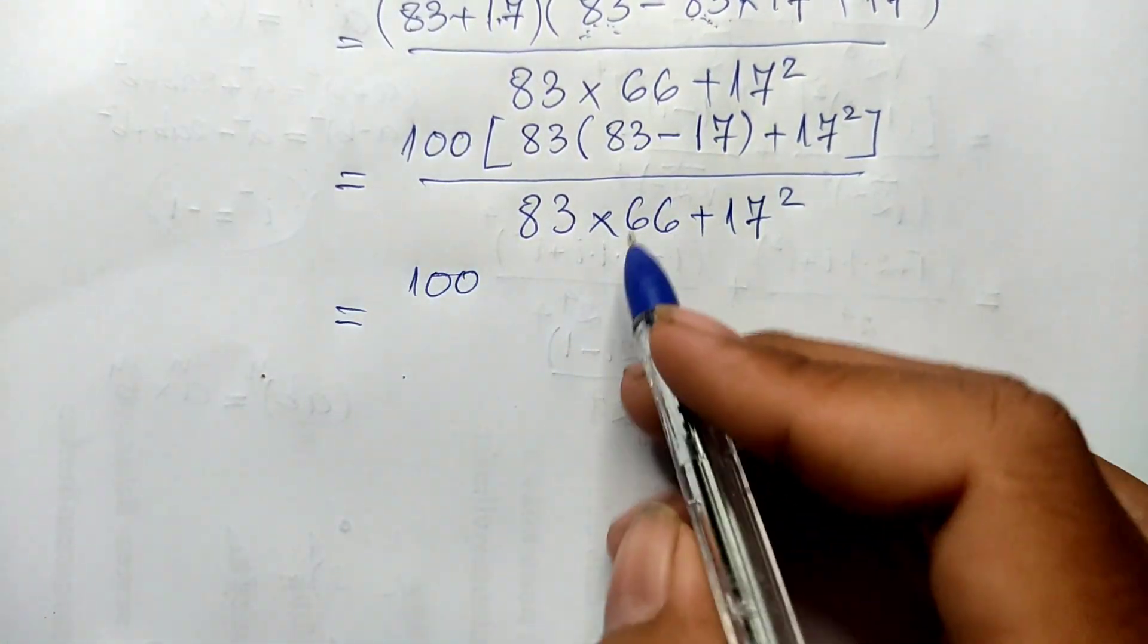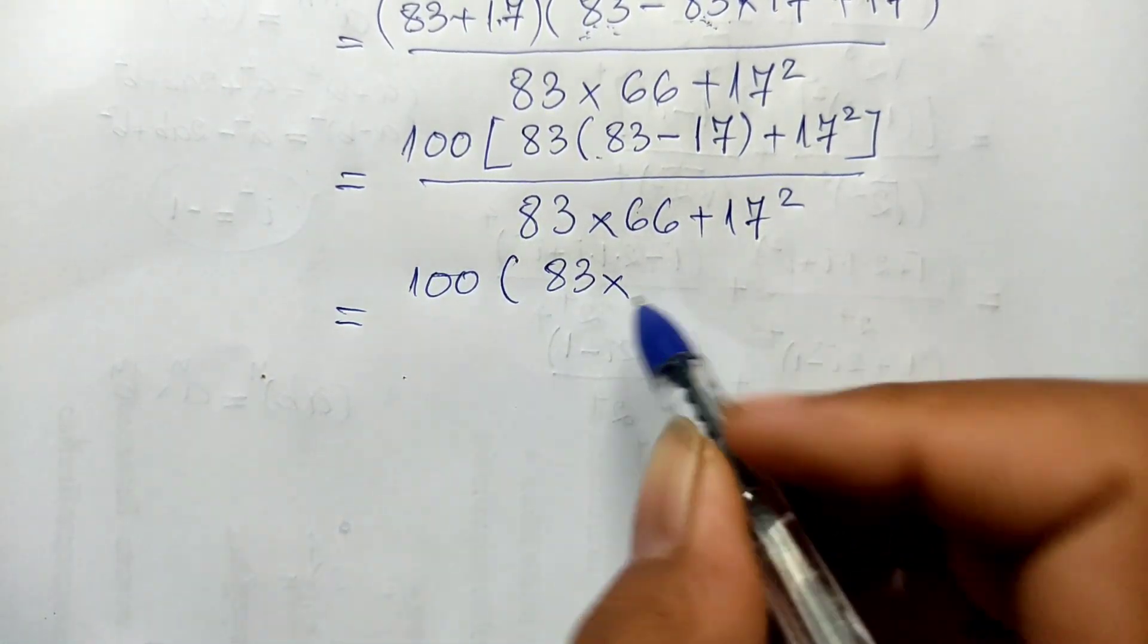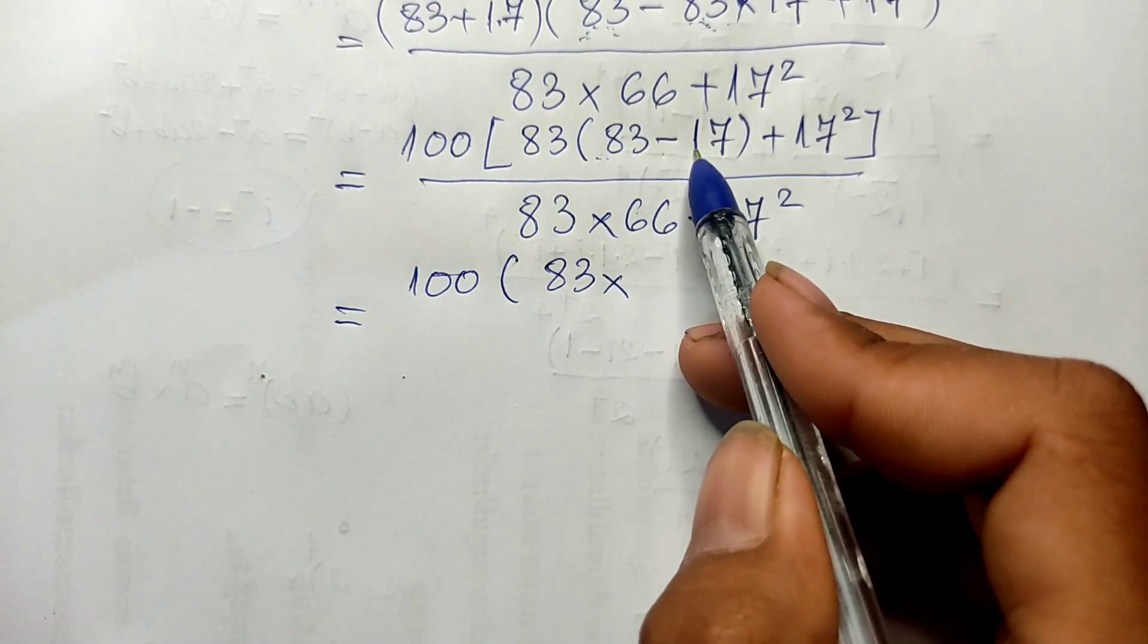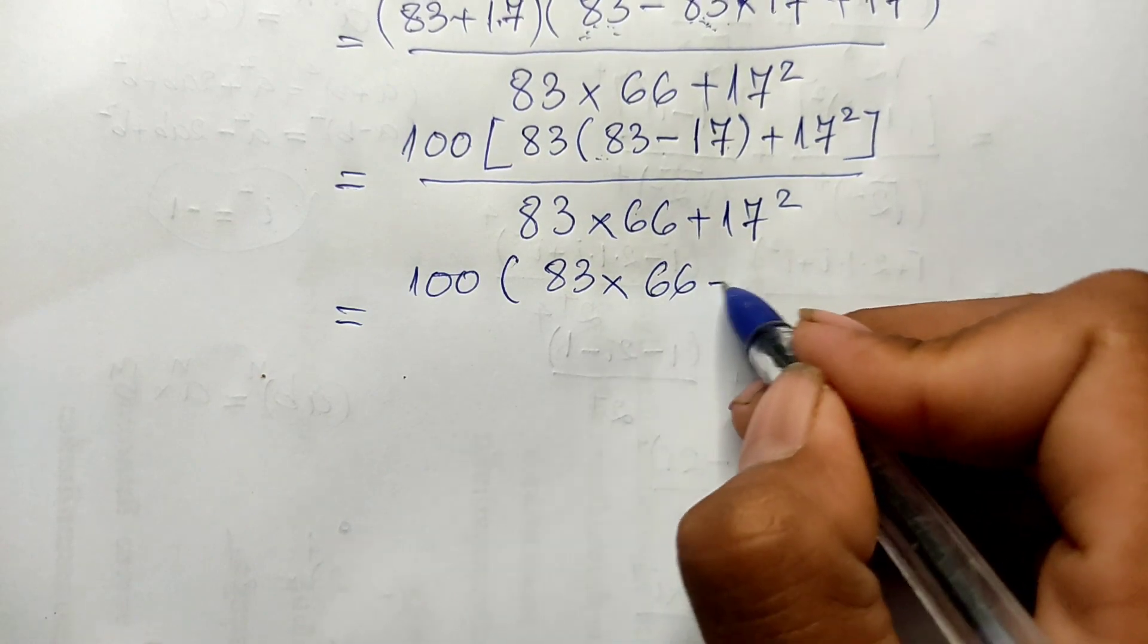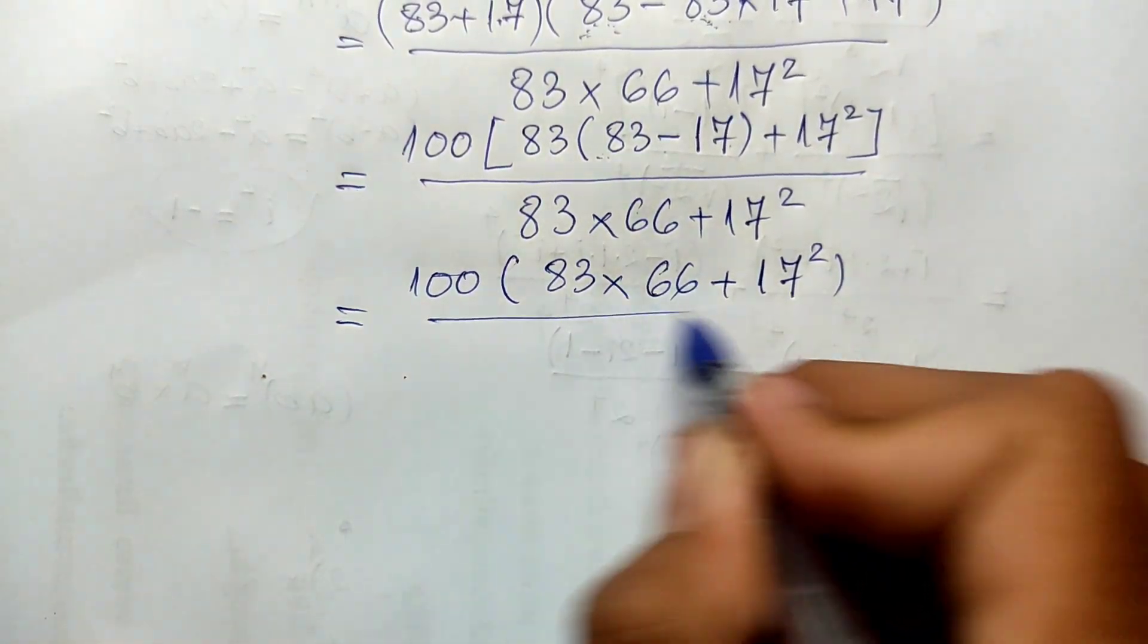This equals 83 multiplied by... 83 minus 17 equals 66... plus 17 squared, divided by 83 multiplied by 66 plus 17 squared.